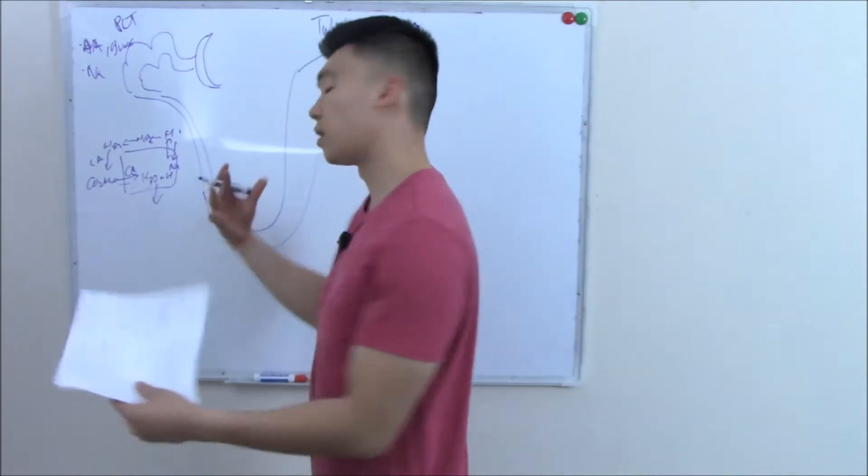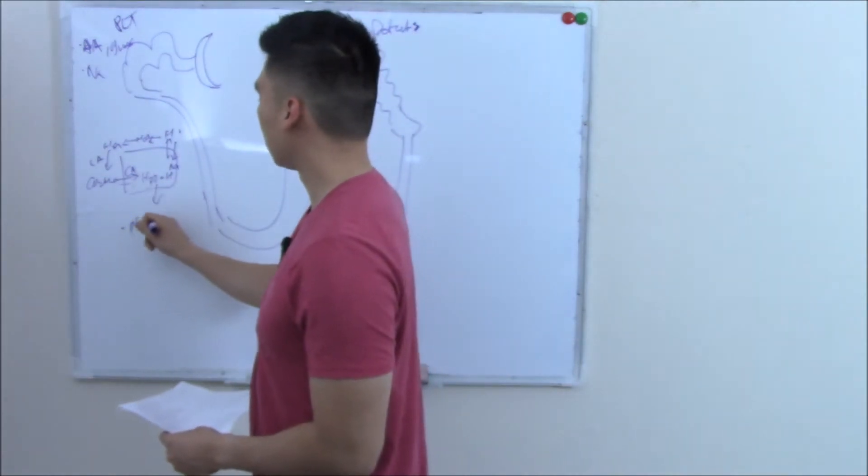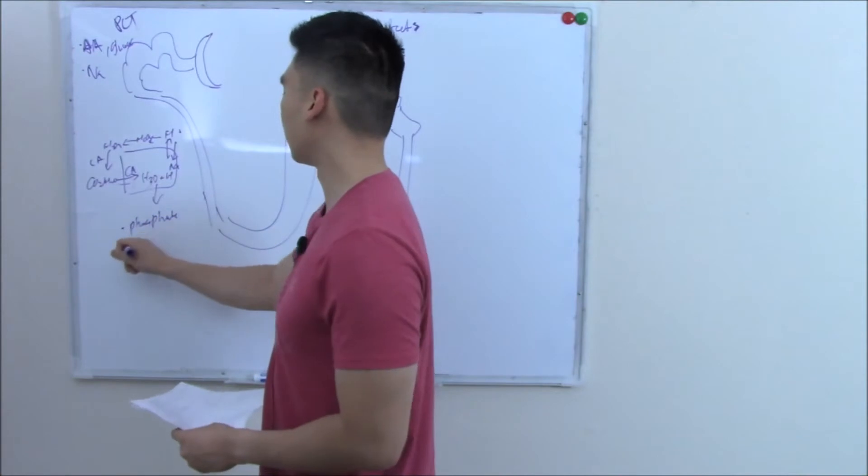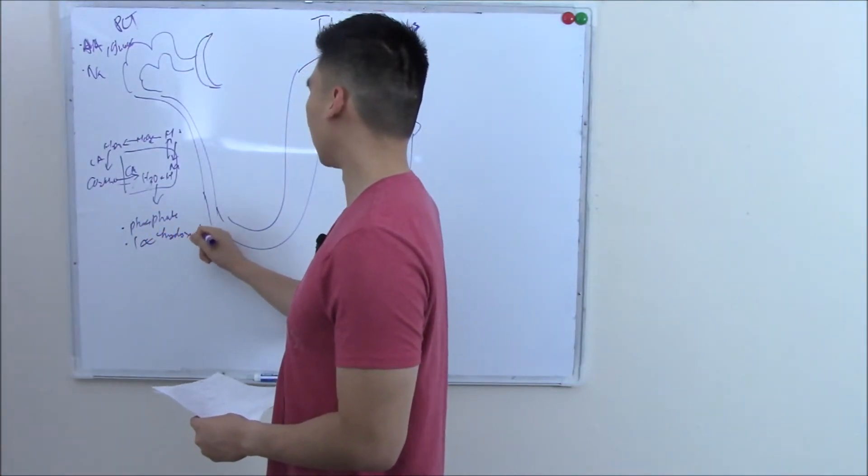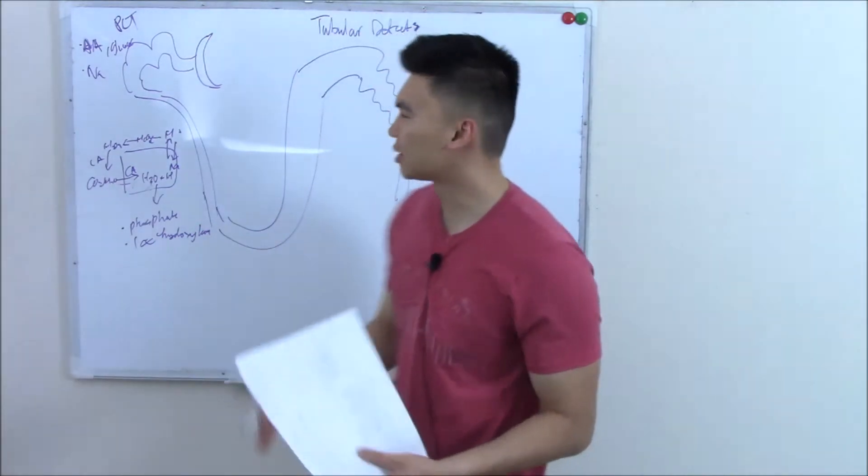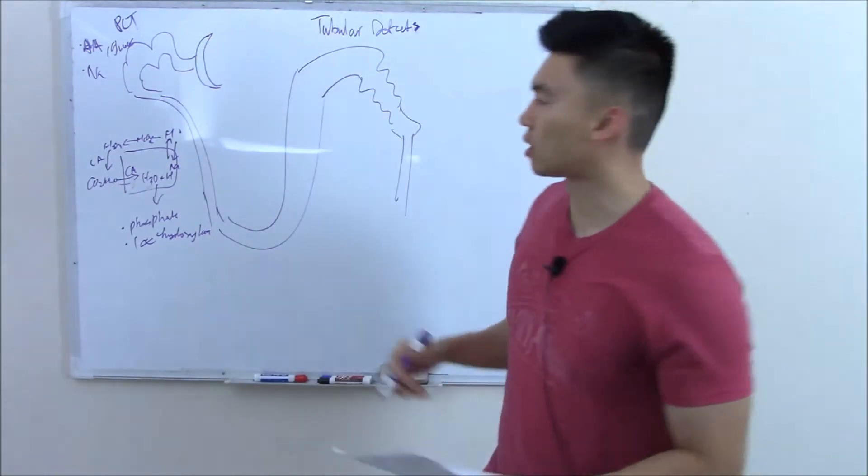And there are some other functions. Reabsorbs a lot of phosphate, has a hormonal component. Remember, one alpha hydroxylase via our vitamin D pathway. So there's a ton of things. That's your proximal convoluted tubule.